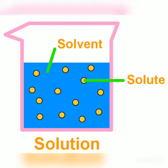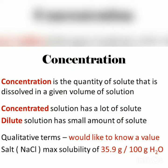The substance present in the lesser amount is known as solute, and the substance present in greater amount is considered as solvent. When we dissolve a solute in a solvent, a solution is formed. A solution may have a small amount of solute dissolved — this is said to have low concentration and is known as a dilute solution. A solution with a large amount of solute is of higher concentration and is known as a concentrated solution. The concentration of a solution is defined as the amount of solute present in a given amount of solution.